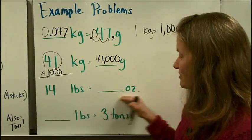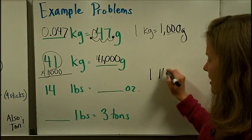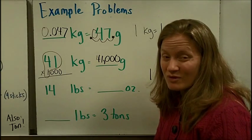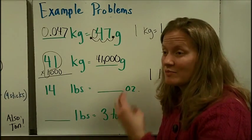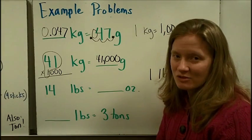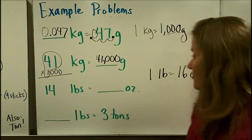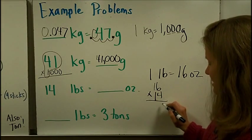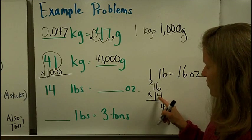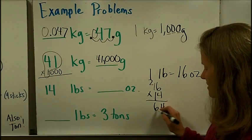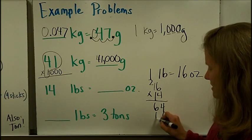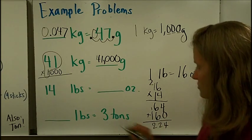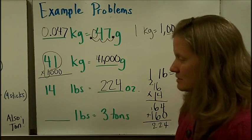Now, going from pounds to ounces: remember that 1 pound equals 16 ounces. For 14 pounds, each pound has 16 ounces, so this is a multiplication problem: 16 times 14. 6 times 4 is 24, carry the 2; 4 times 1 is 4, plus 2 is 6; drop the 0; 1 times 6 is 6; 1 times 1 is 1. Add them together and get 224 ounces in 14 pounds.